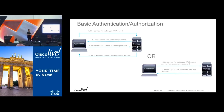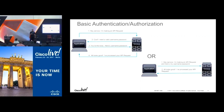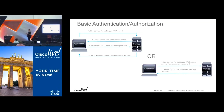With basic authentication, the application makes a request to the service. The service can come back and say it needs your credentials. You send over a base64 encoded string that includes the username, colon, and then the password. Usually you bundle that all together in one call — you say I want to use this API, here are my basic credentials — and if everything checks out, it comes back with the content you asked for.